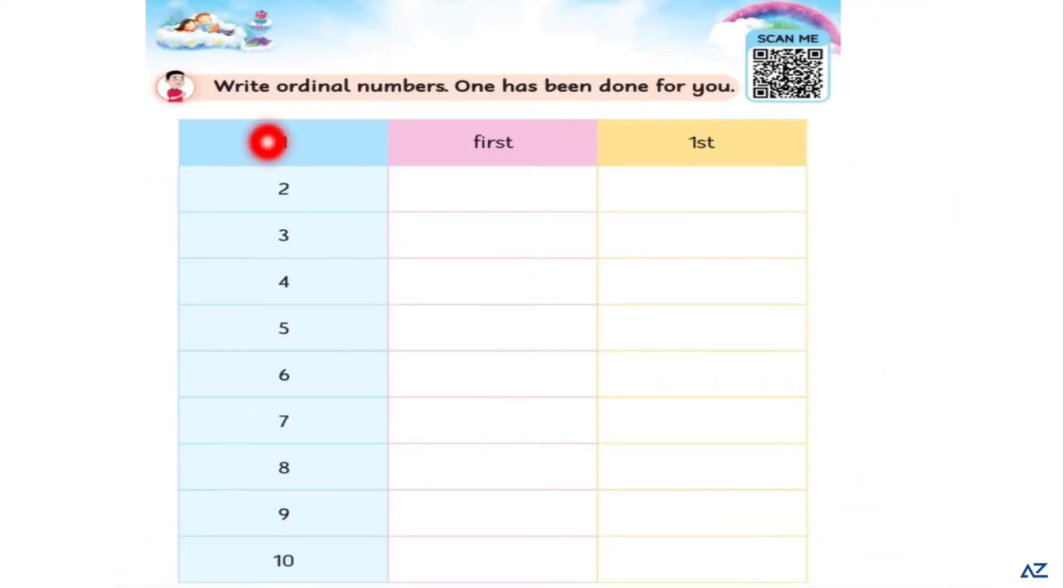Now write ordinal numbers. One has been done for you. This is number 1, 2, 3, 4, 5, 6, 7, 8, 9 and 10. 1, 1st and 1st, you will write like this.